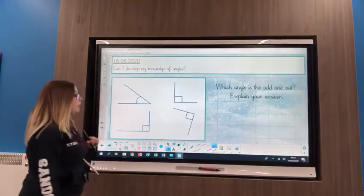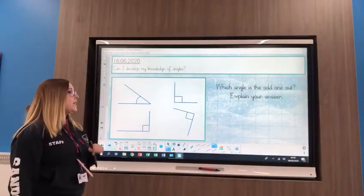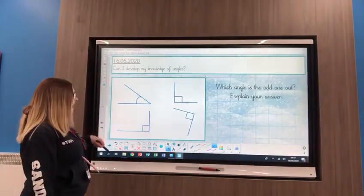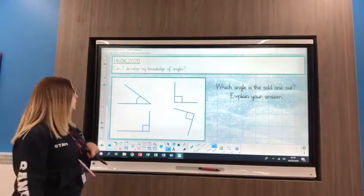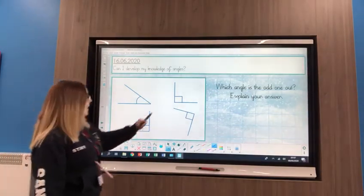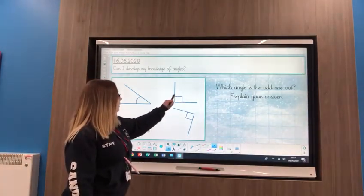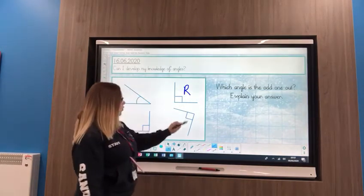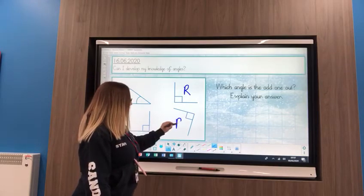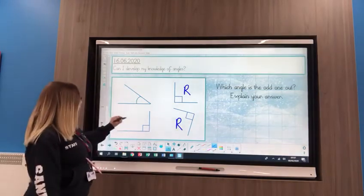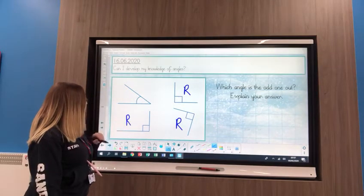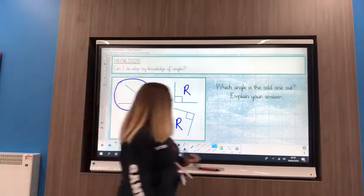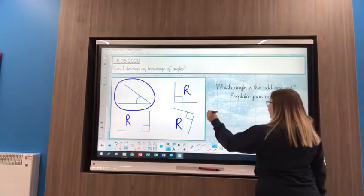Let's have a go at another one then. This one wants to know which one is the odd one out, so you've got to look at them very carefully and think what's the same about some of these angles and what's different. Now I can see that this one's got the square here, so that must be a right angle. This one also has the square so that must be a right angle, and so does this one, which means this angle must be my odd one out.